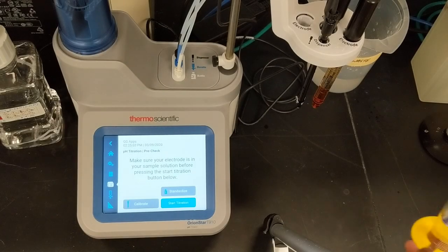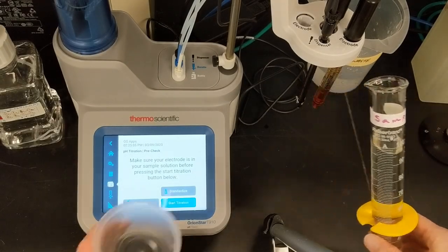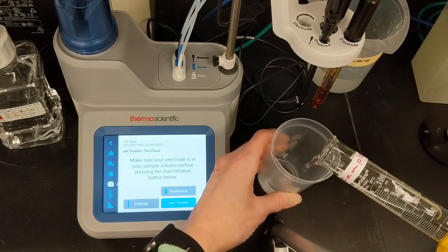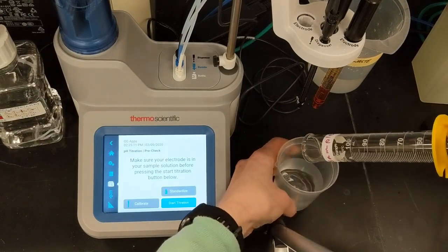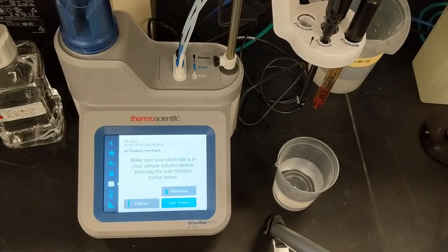To show the accuracy of the low-level alkalinity titration, I'll run a standard of known alkalinity. I measure 100 mL of the standard in a graduated cylinder and transfer to a clean beaker.